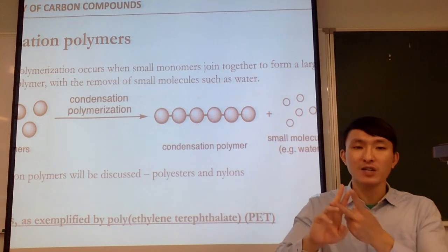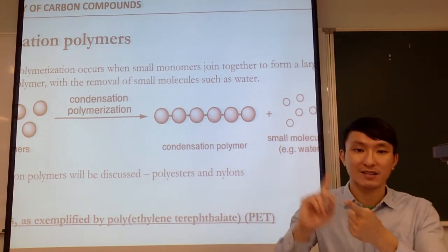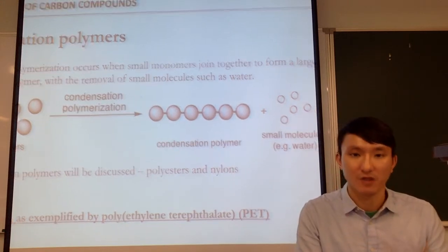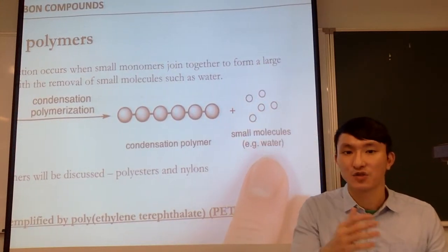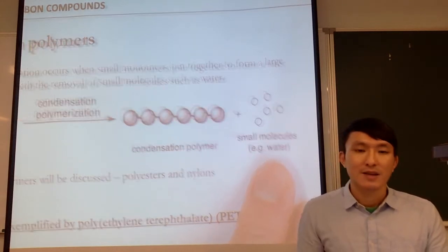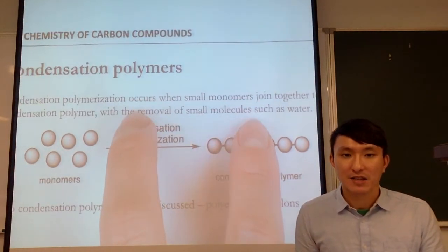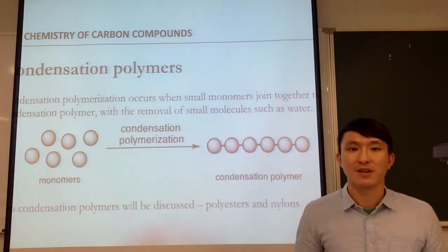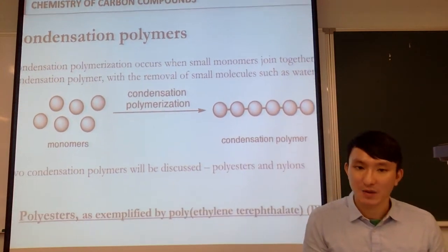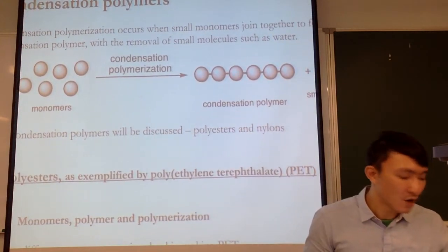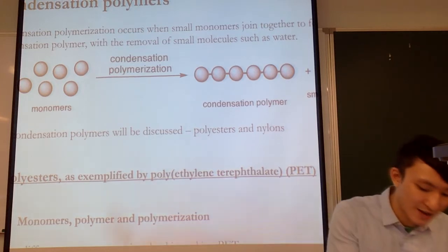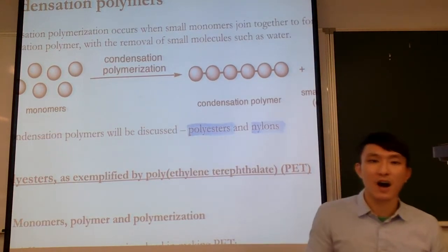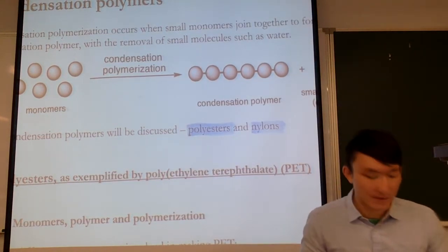We have two types of polymerization: addition polymerization and condensation polymerization. The difference is whether or not small molecules are removed during polymerization. Make sure you memorize the definition or know how to describe what a condensation polymer is. In our DSC syllabus, we need to know two examples: polyesters and nylons.